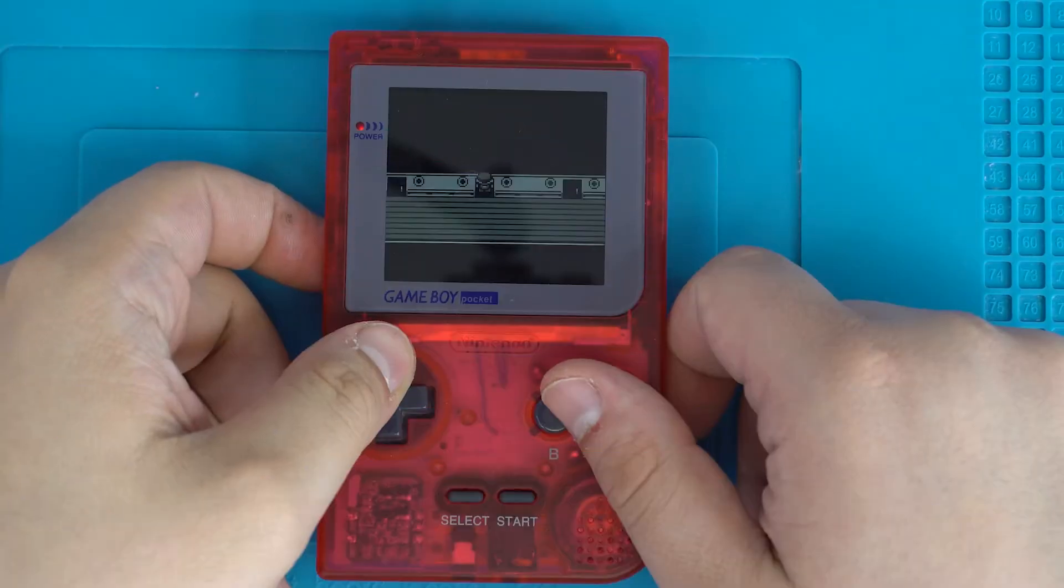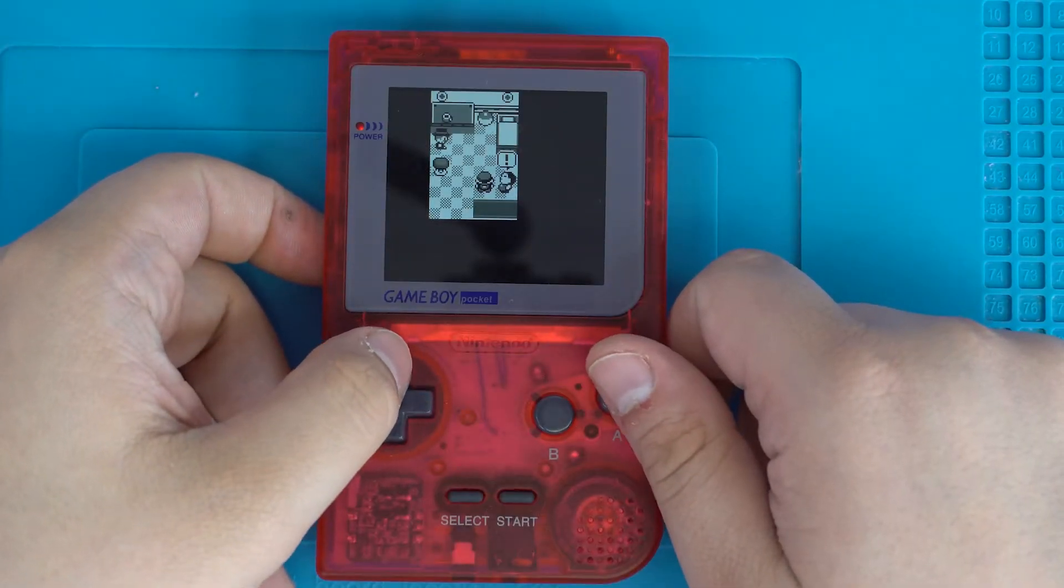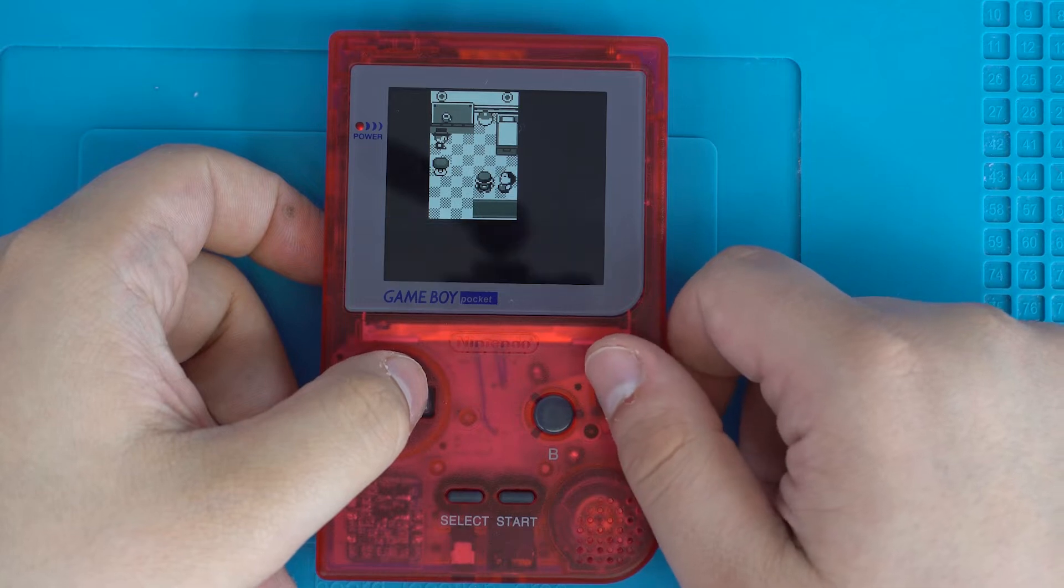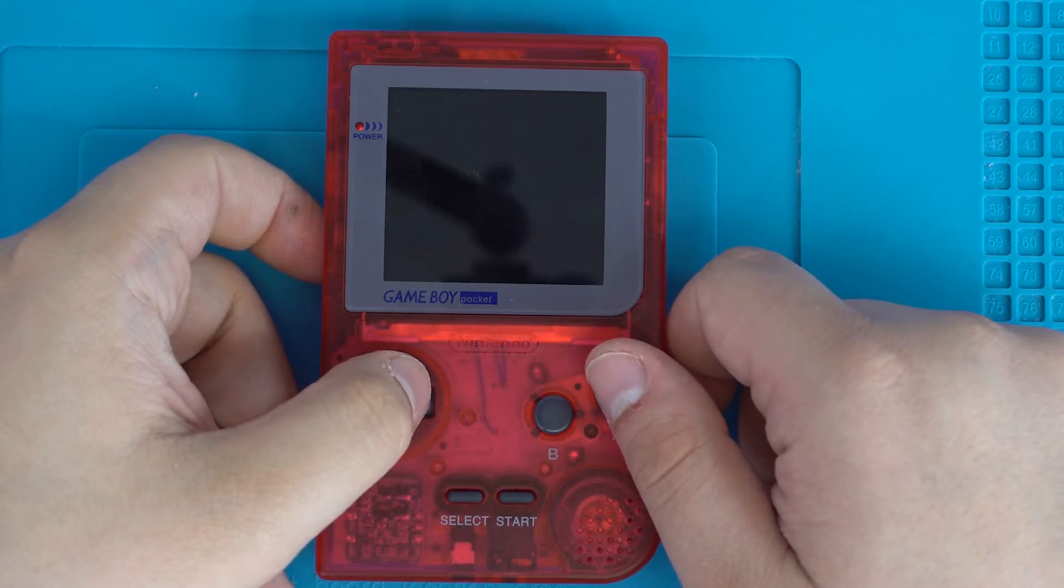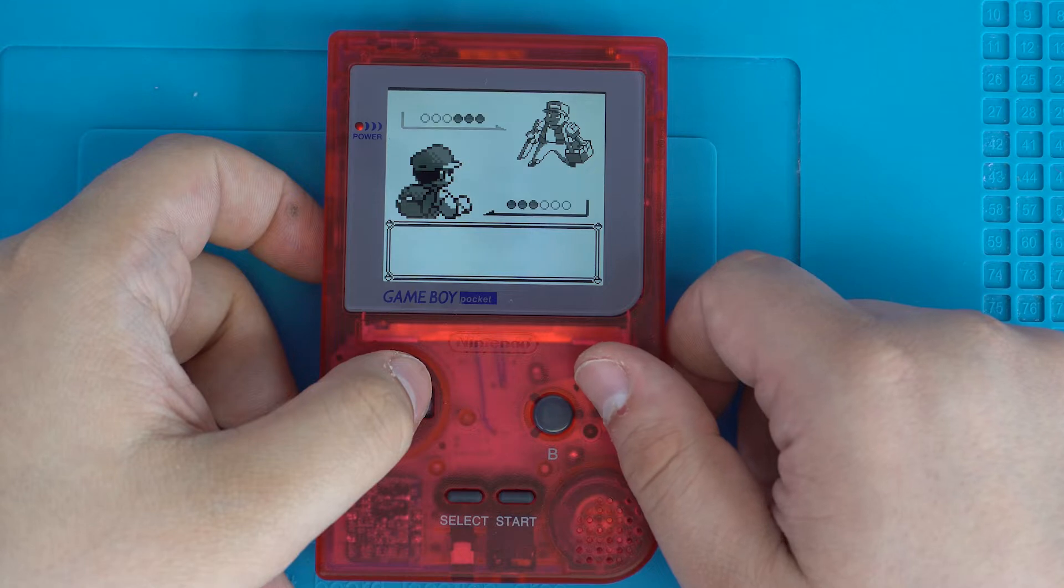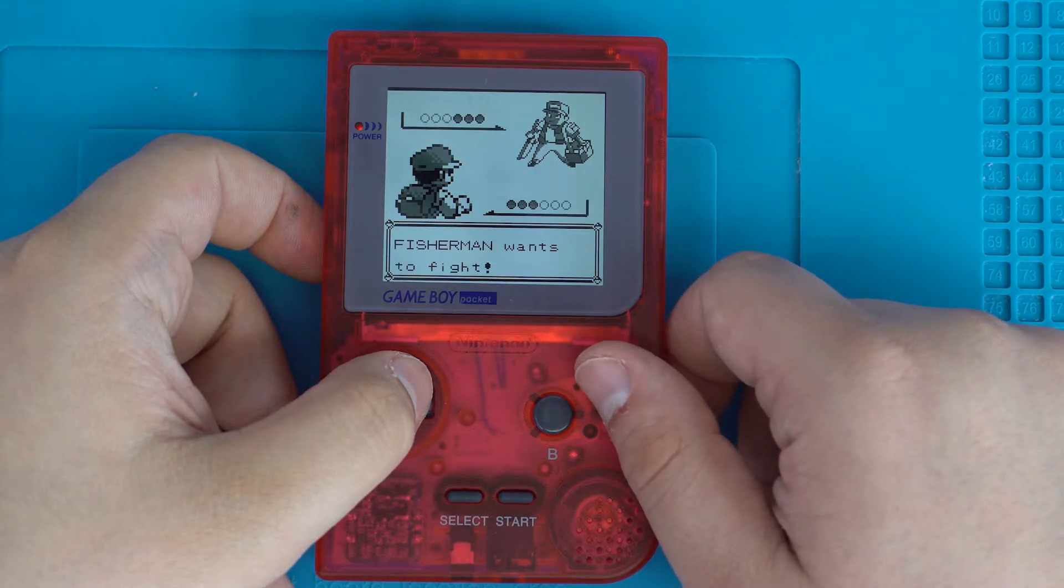Today we'll be going over how to install the high speed IPS kit for the Game Boy Pocket. This kit features 36 built-in retro color modes as well as an on-screen display.